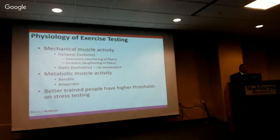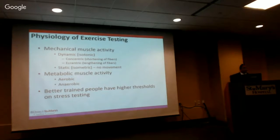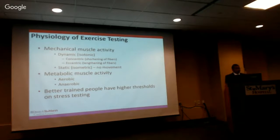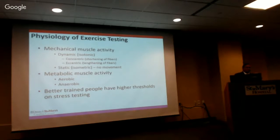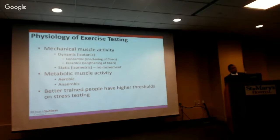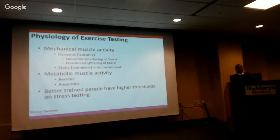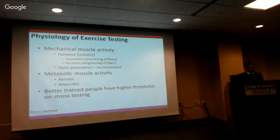When we test people with exercise, there are different kinds of exercise activity. Dynamic exercise is isotonic, involving stretching and shortening of muscle fibers. Static exercise maintains a standard length of muscle fibers. We use dynamic testing. Muscles undergo aerobic metabolic activity, and once you go beyond the aerobic threshold, you start anaerobic metabolism. Better-trained people have higher thresholds and need to be taken further beyond just the standard heart rate.